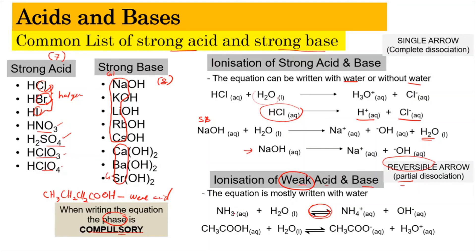For weak acids, the reversible arrow shows partial dissociation, and we include water. For example, ammonia acting as a weak base accepts a proton to form a hydroxide ion. For ethanoic acid as a weak acid, it donates a proton to form the ethanoate ion and the hydronium ion. So: strong acid uses a single arrow; weak acid uses a reversible arrow and must include water.